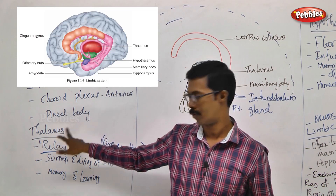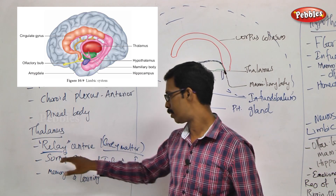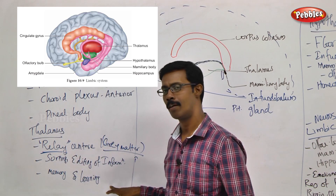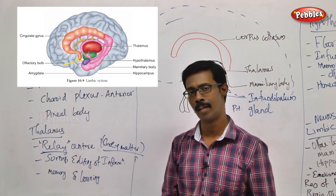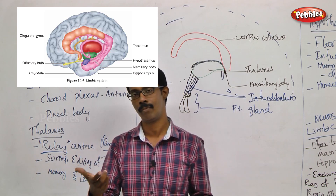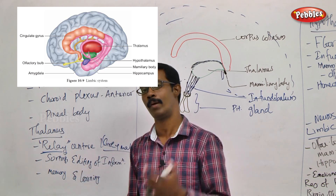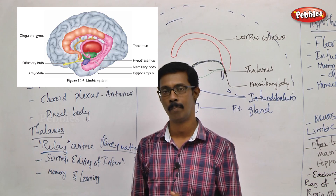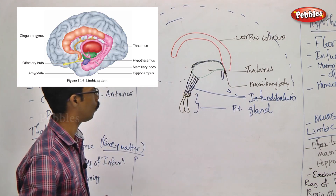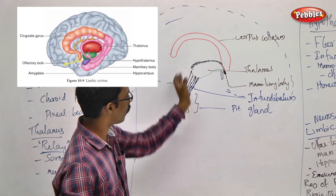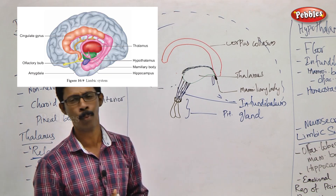Thalamus is the relay center of the brain, responsible for information editing and information sorting. In that area, memory and learning functions also take place. This is what the thalamus does. Below the thalamus is the Hypothalamus.